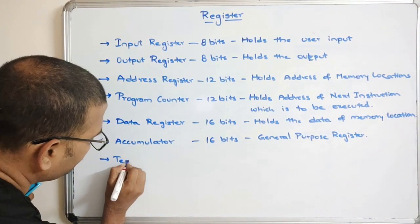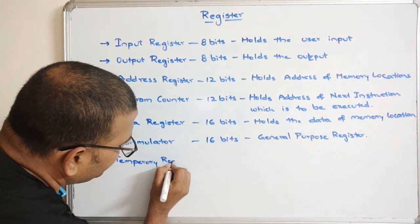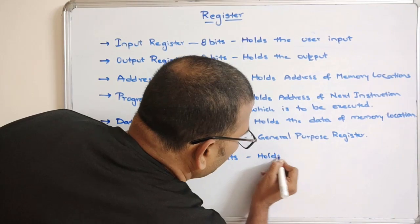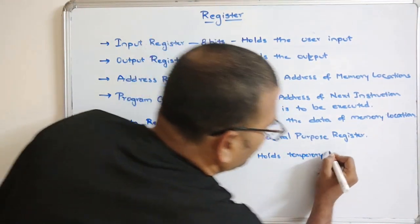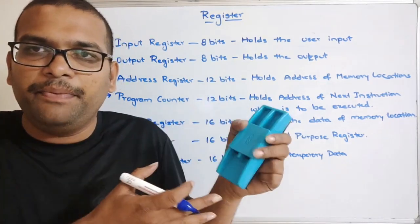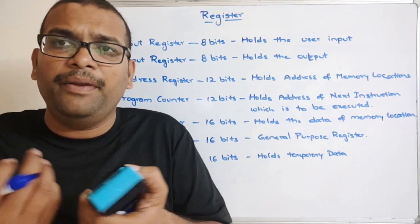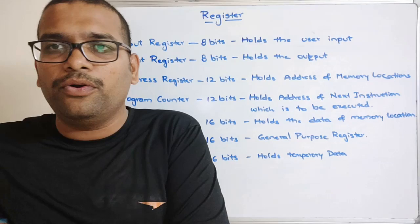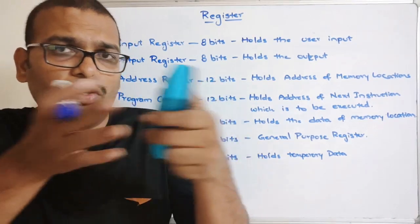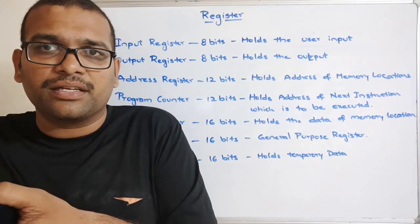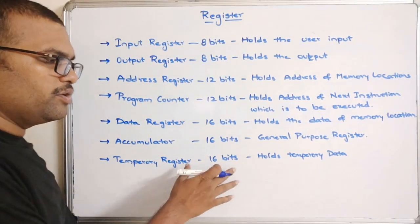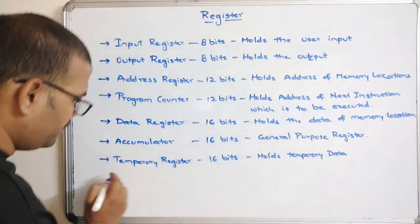The Temporary Register is also 16 bits in size and it holds temporary data. When an instruction is being executed, intermediate results generated between the input and final output are stored in this temporary register.